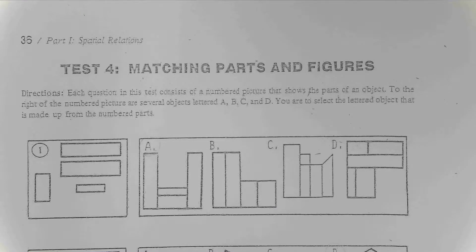Directions. Each question in this test consists of a numbered picture that shows you the parts of an object. To the right of the numbered picture are several objects lettered A through D. You are to select the lettered object that is made up from the numbered parts.